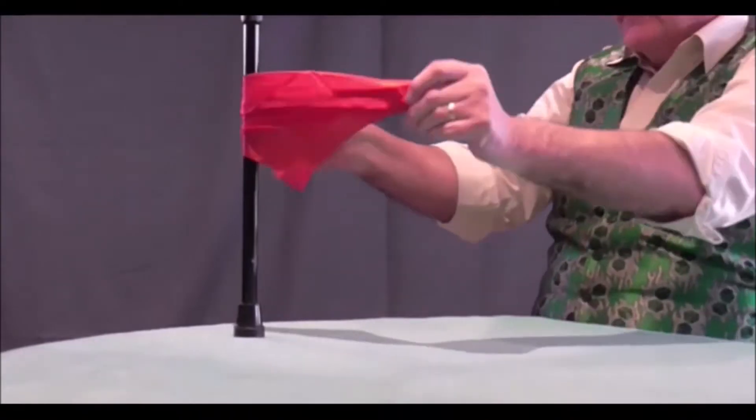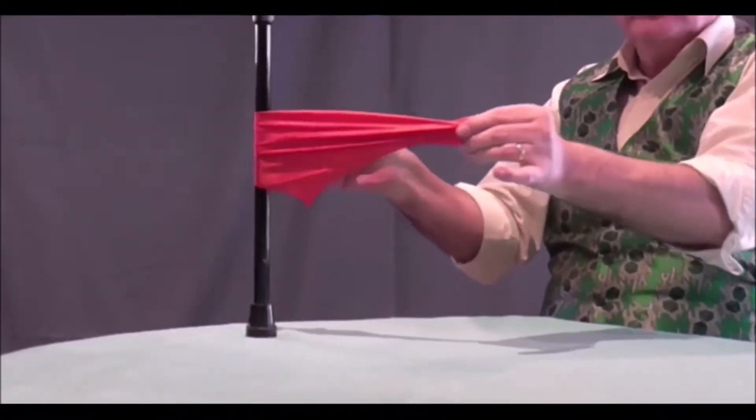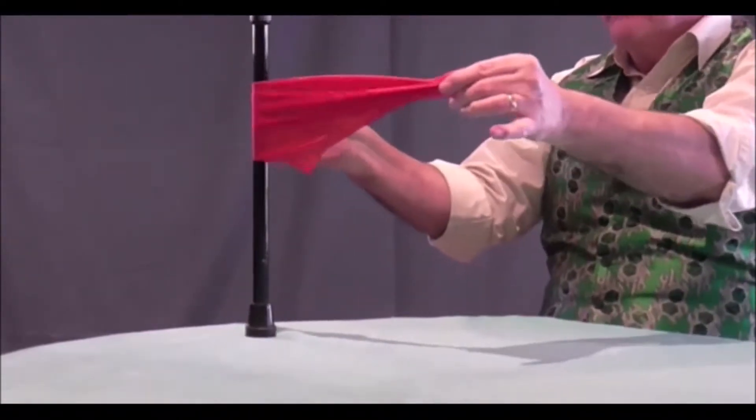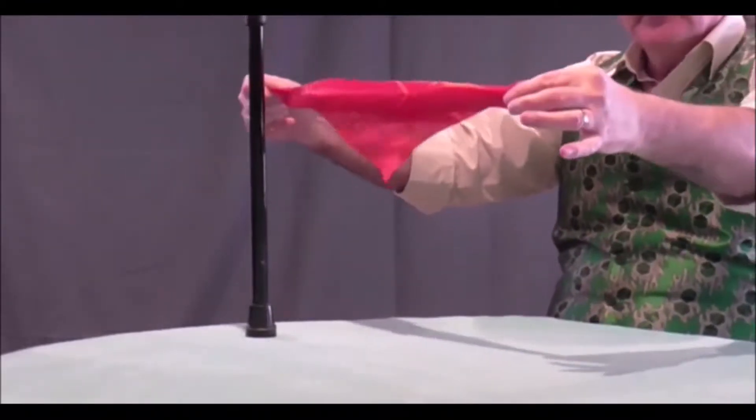You take a scarf or a handkerchief, a silk handkerchief, and a cane, and just by giving it a bit of a tug, the scarf appears to pass right through the cane.